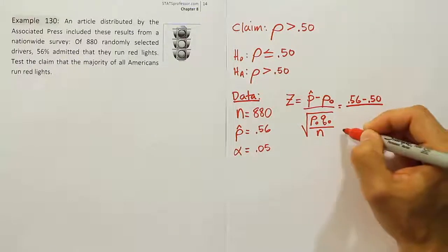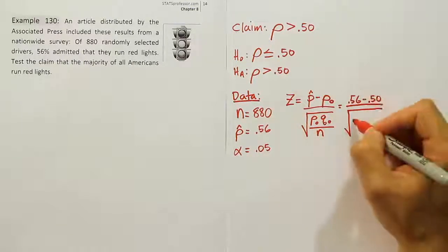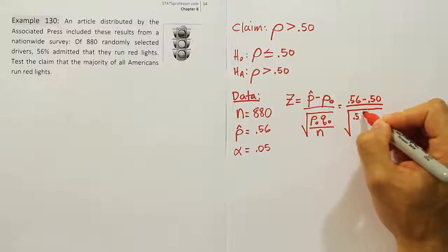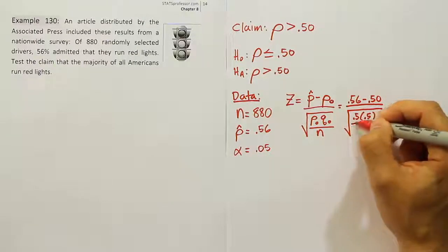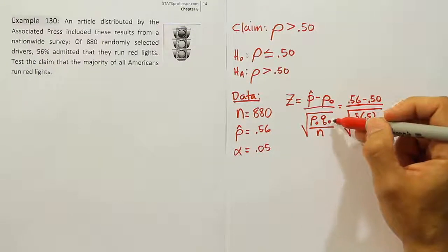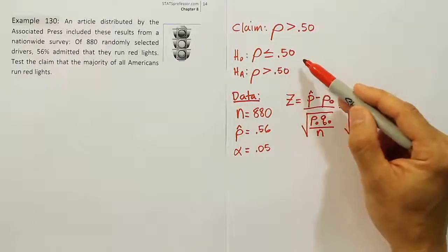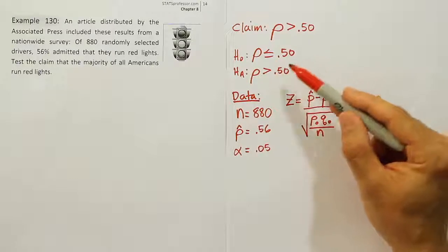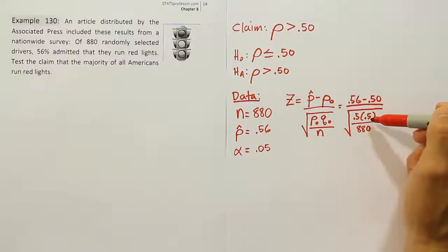We divide by the square root of p₀ times its complement q₀. The null value is 0.50, so the complement is also 0.50. Then divide by n, which is 880. Remember where q₀ comes from—it's 100% minus p₀. So 100% minus 50% gives 50%. These two numbers must add up to 1.